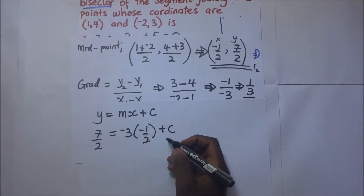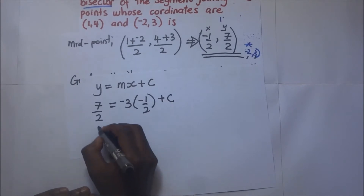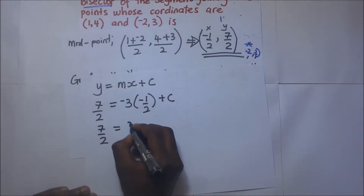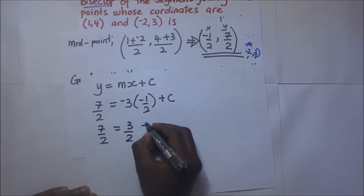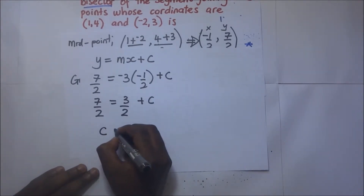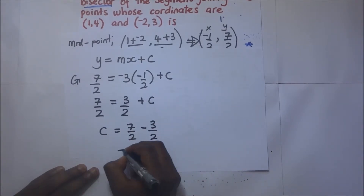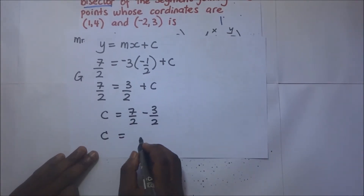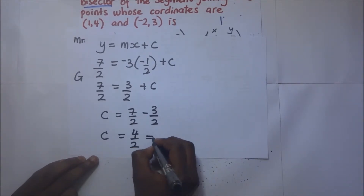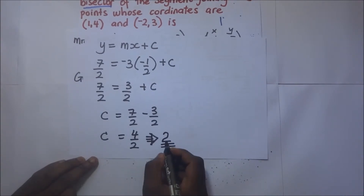We solve for c. Negative 3 times negative 1 over 2 gives 3 over 2. So c = 7 over 2 minus 3 over 2, which equals 4 over 2, giving us c = 2.